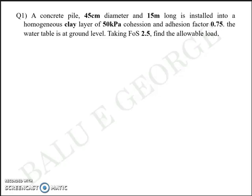Now based on the estimation we will try to solve a few numerical problems, the simple ones. The first one is given on the screen. A concrete pile 45 cm diameter and 15 meter long is installed into a homogeneous clay layer of 50 kPa cohesion and an adhesion factor of 0.75. Water table is given at the ground level. We are asked to find the allowable load for a factor of safety of 2.5.